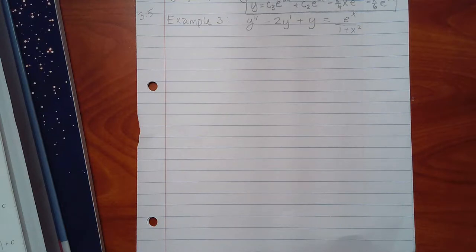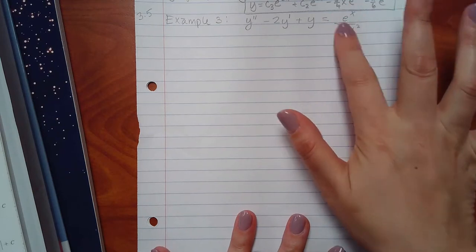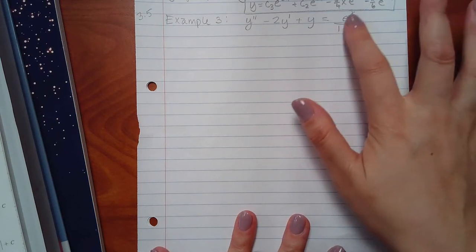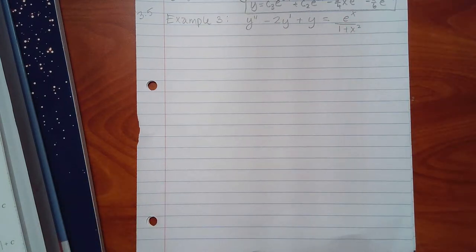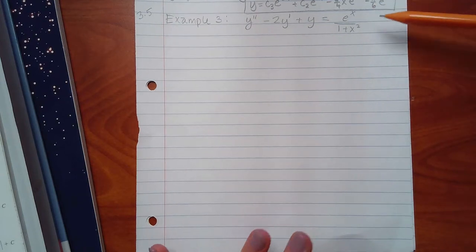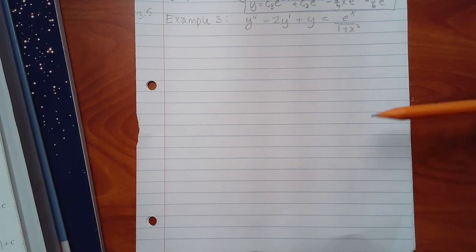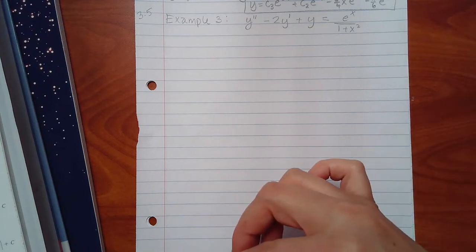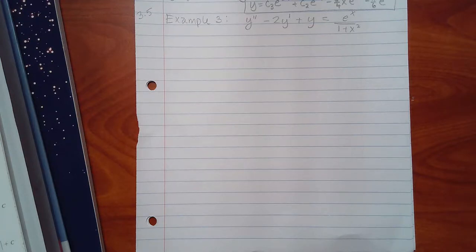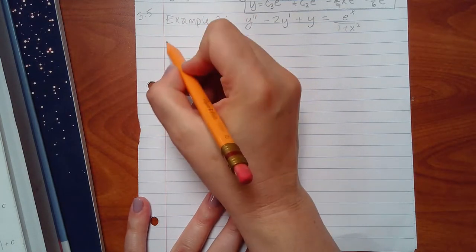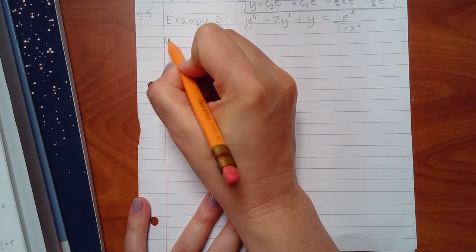In Section 3.3, which was another concept we covered on Thursday, the right-hand side was zero. What we did is if it was zero, we solved what's called an auxiliary equation. In 3.5, we still have to do that — we still have to pretend that the right side is zero and solve that auxiliary equation. However, after we do that, we have more steps.